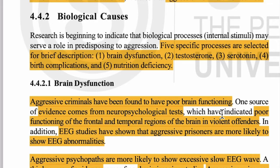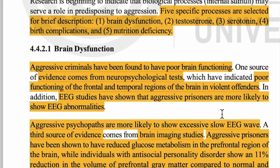Biological causes में पाँच specific processes बताए गए हैं — जो body से related चीज़ें aggression को जन्म देती हैं। Number one: brain dysfunction; number two: testosterone; number three: serotonin; number four: birth complications; number five: nutritional deficiency। ये पाँच biological causes हैं। इनमें से पहला है brain dysfunction।